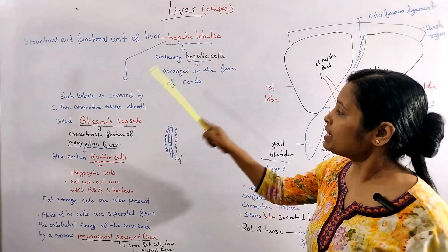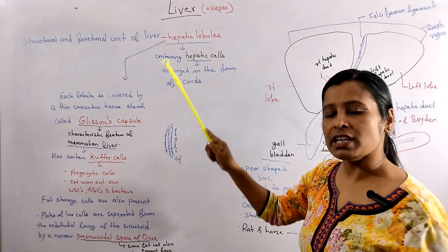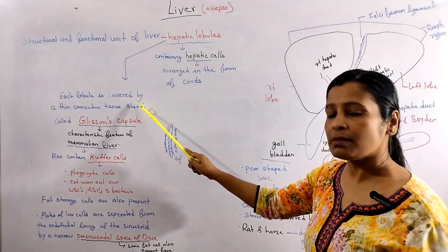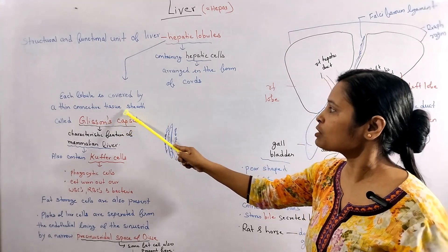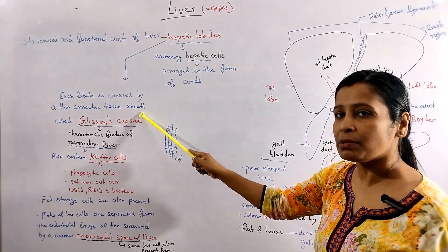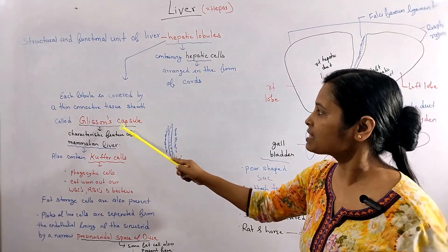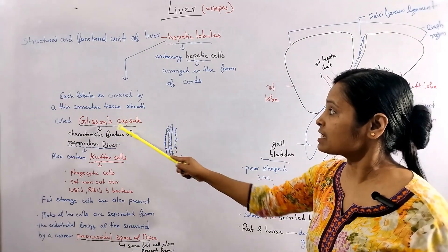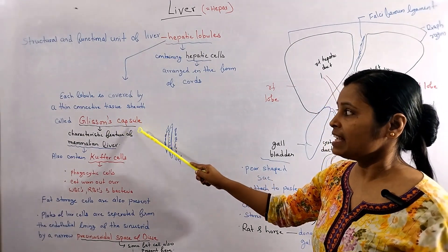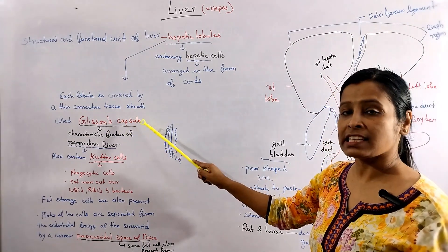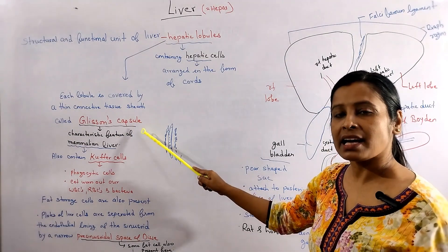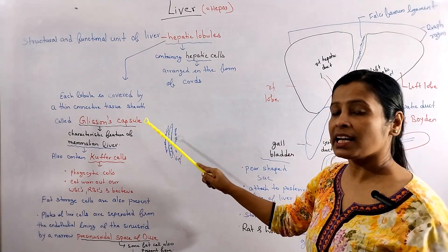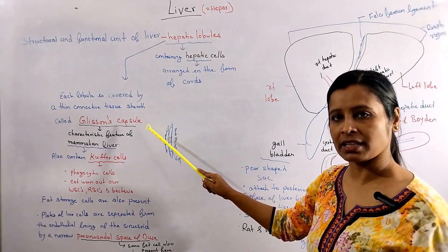Each hepatic lobule is surrounded by connective tissue called Glisson's capsule. The presence of Glisson's capsule in the liver is a characteristic feature of mammalian liver.